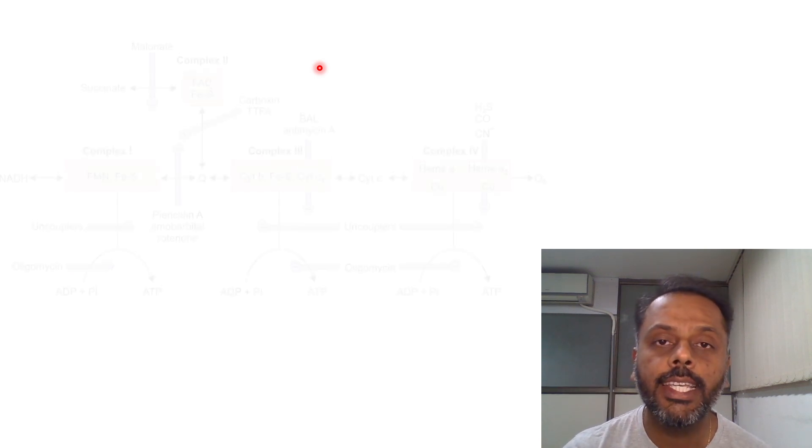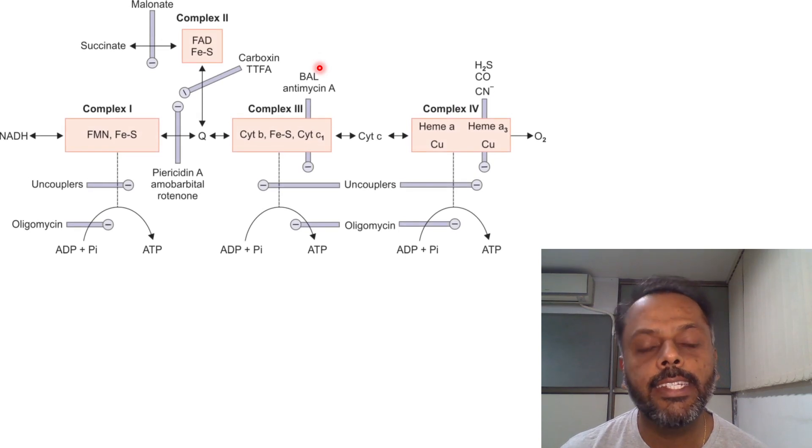Inhibitors of the electron transport chain are divided into four main categories. First are inhibitors of the ETC itself. Second are inhibitors of oxidative phosphorylation. Third are uncouplers of oxidative phosphorylation, and the fourth category are ionophores.